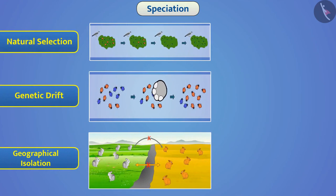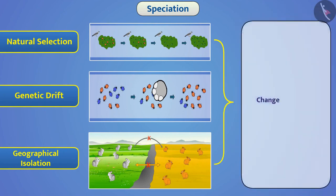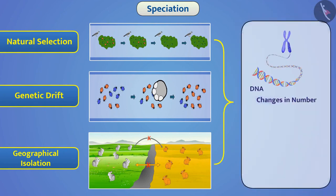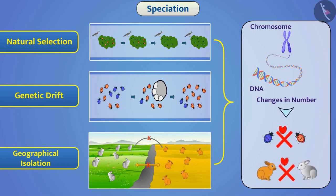In these three situations, speciation can happen in different ways like changes in DNA or change in number of chromosomes. Then, the gametes of both groups cannot fertilize, thus resulting in speciation.